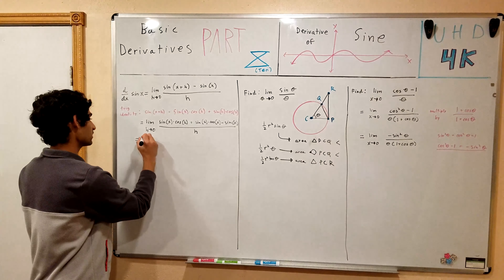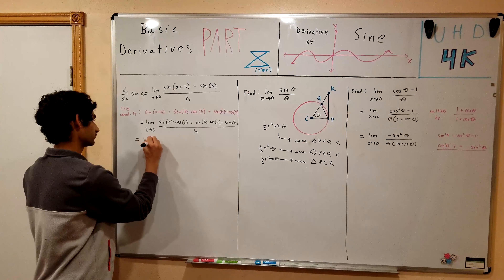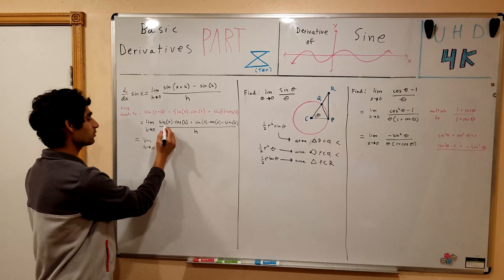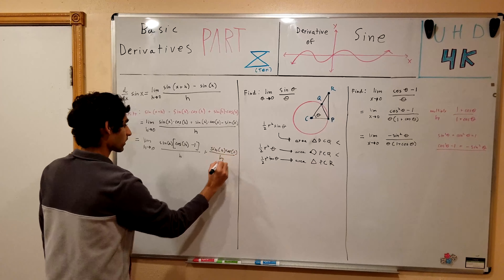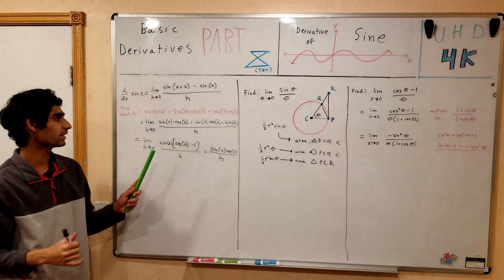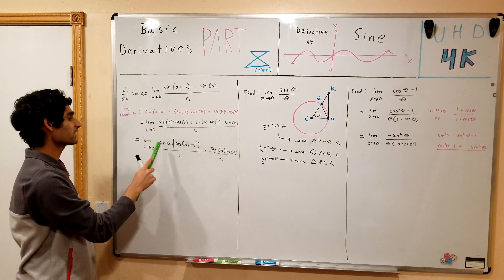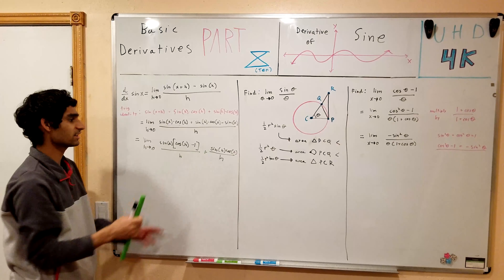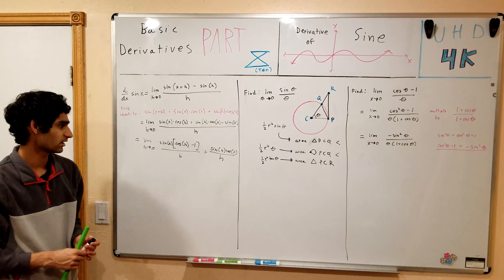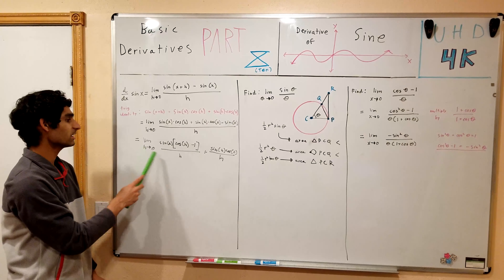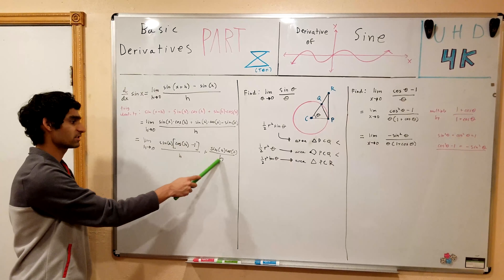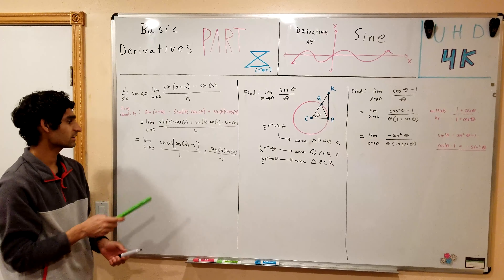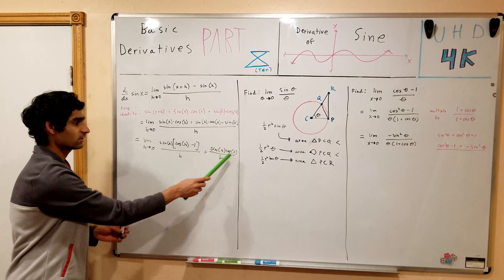We're going to rearrange some terms — grouping certain terms together. I've simply rearranged the terms, putting sine x cosine h and negative sine x together and factoring out the sine x, and separating the sine h cosine x term. Now we can split this up into two separate limit functions: the limit as h goes to 0 of the first group, plus the limit as h goes to 0 of the second.